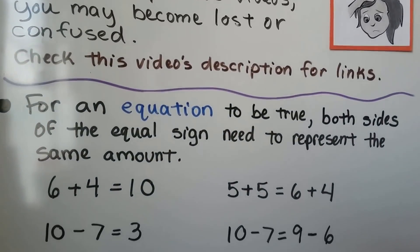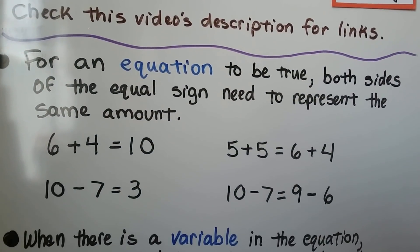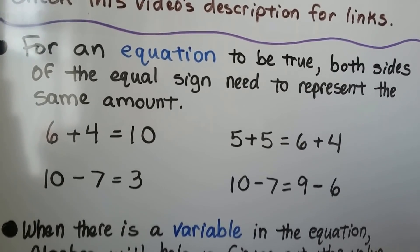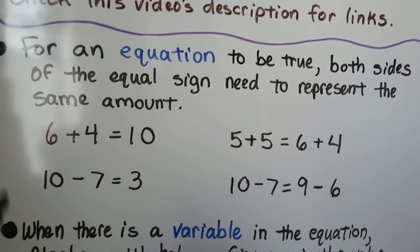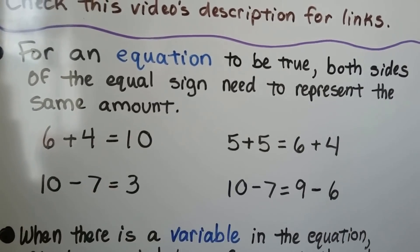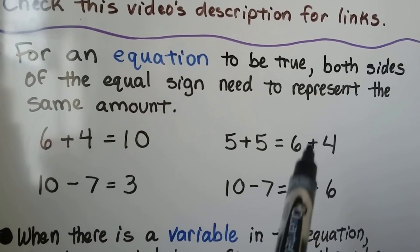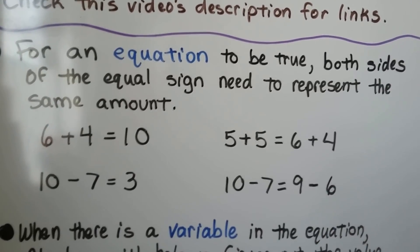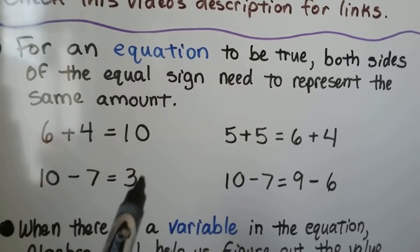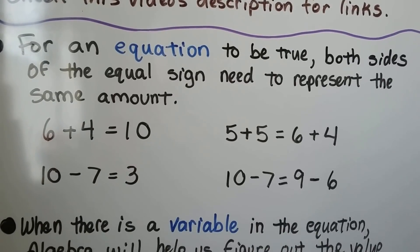For an equation to be true, both sides of the equal sign need to represent the same amount. 6 plus 4 equals 10 — this side equals 10 and that side equals 10. See how it's balanced? This side equals 3 and that side equals 3.